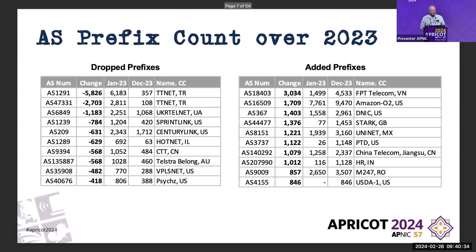That brings in a more general idea of who's dropping prefixes last year: Turkey did, Ukrainians did, Sprintlink. One of the other big retail providers, CenturyLink. Folk are dropping. Who's growing? Amazon is growing, Vietnam is growing, but the other areas of growth are not frenetically high. So it's an interesting view of the FIB count.